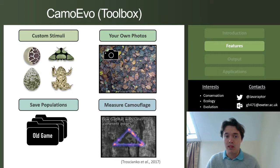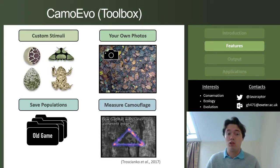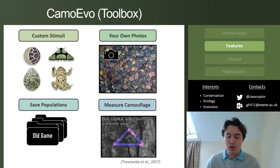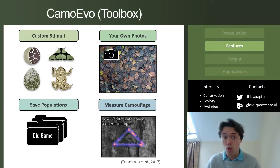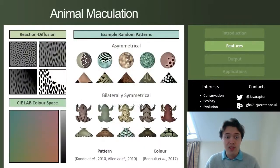To solve these issues, I developed CamoEvo as part of my PhD in order to allow anyone to run their own camouflage evolution experiments on whatever device or PC they own. This system allows you to use custom stimuli, upload your own background photos, save populations for future use, and it can output some camouflage measures as well. Because it's built in ImageJ, you can also incorporate other plugins within this system.